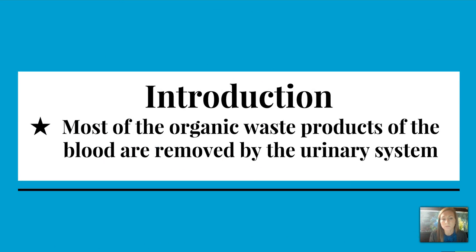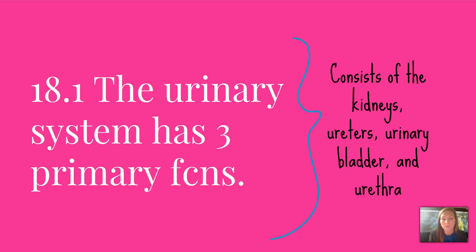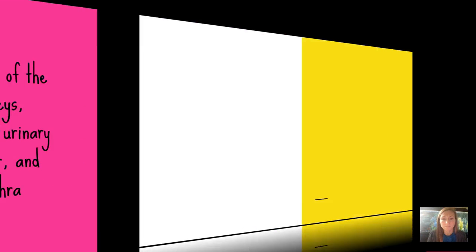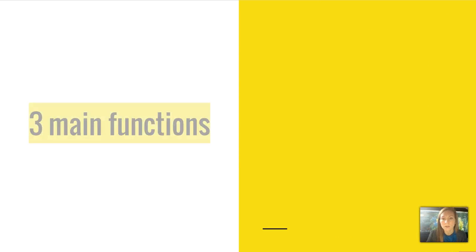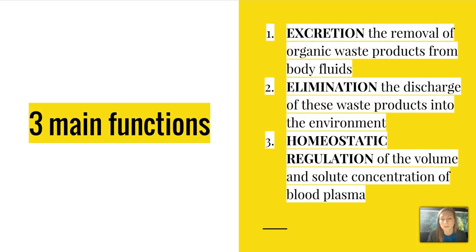Most of the organic waste products of the blood are removed by the urinary system — that's the big picture purpose of it. There are three main functions, and the urinary system consists of the kidneys, ureters, urinary bladder, and urethra. Those three main functions are excretion, elimination, and homeostatic regulation.